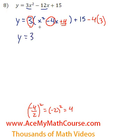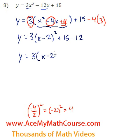So we have y equals 3. That's a perfect square trinomial, which factors into x minus 2 squared. And that's just plus 15. 4 times 3 is just 12. So we have minus 12. Y equals 3 times x minus 2 squared. 15 minus 12 is 3.